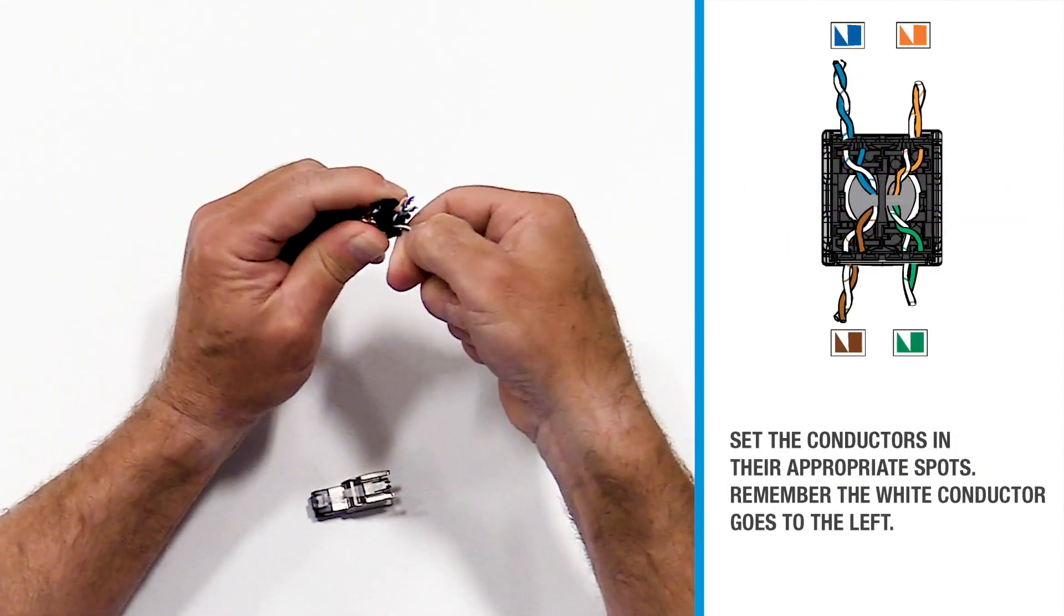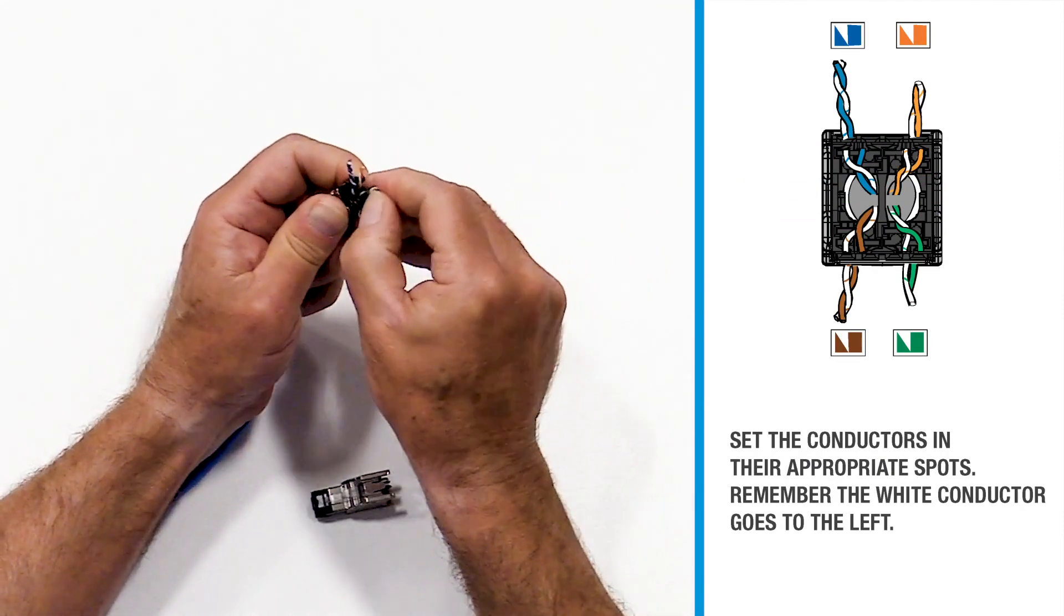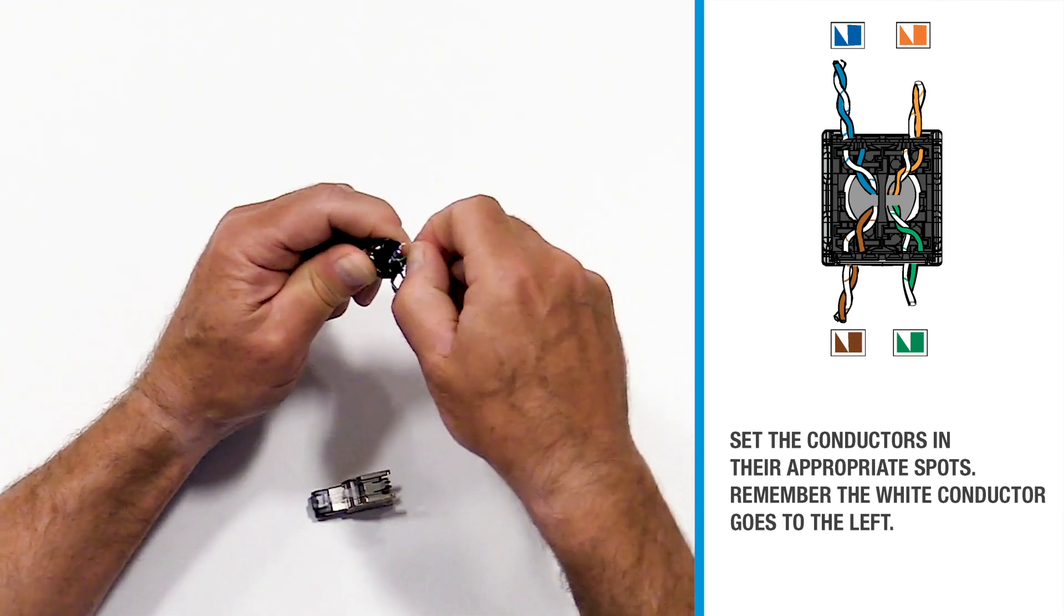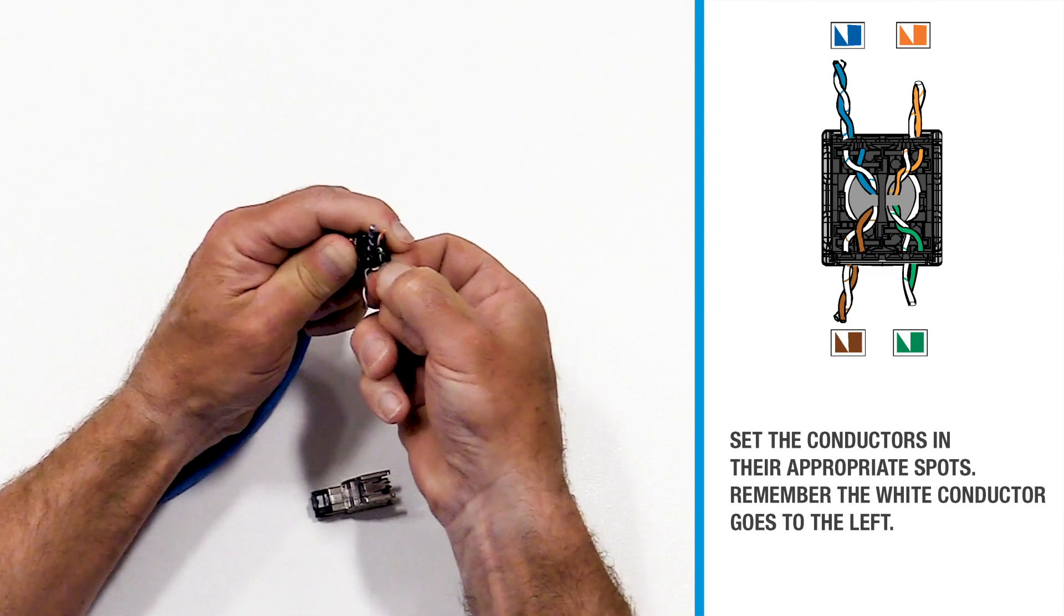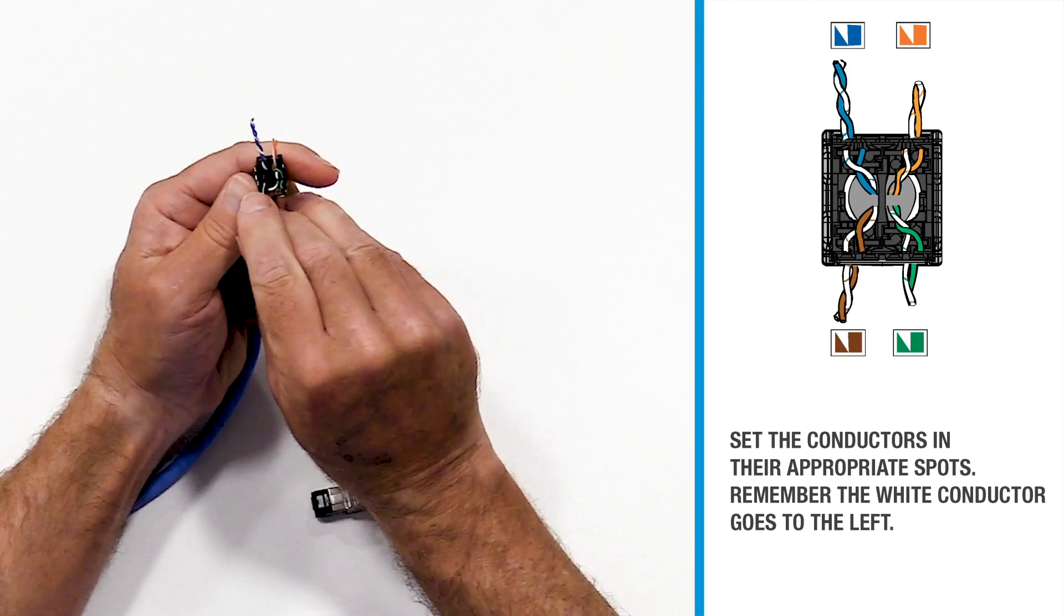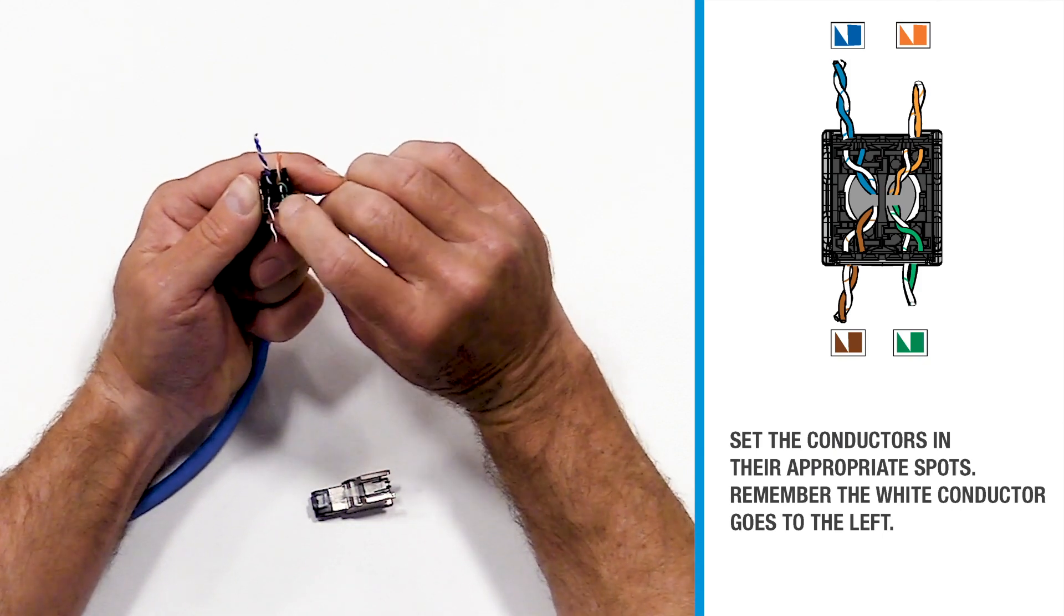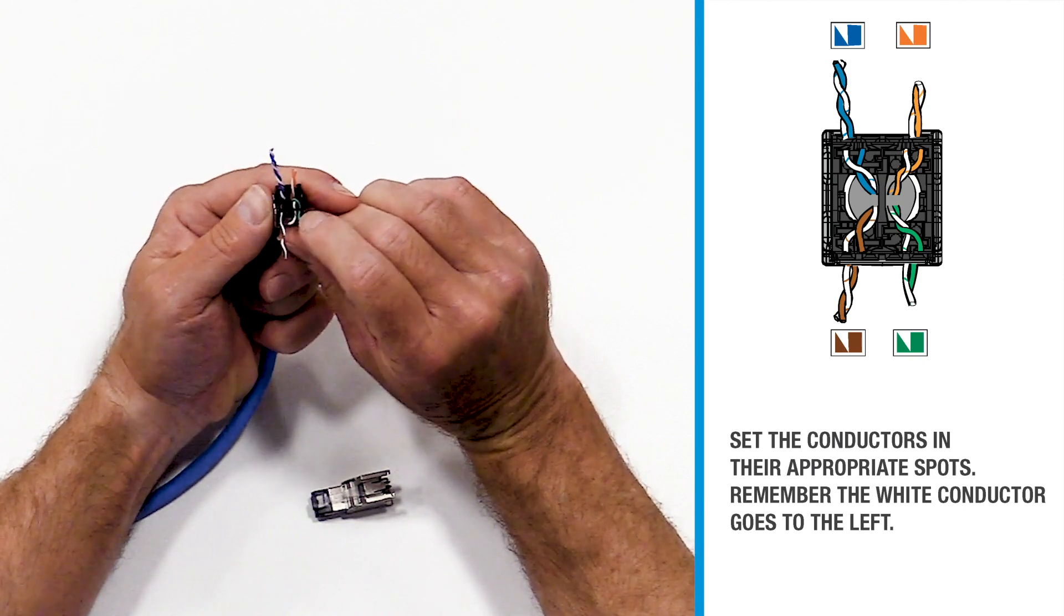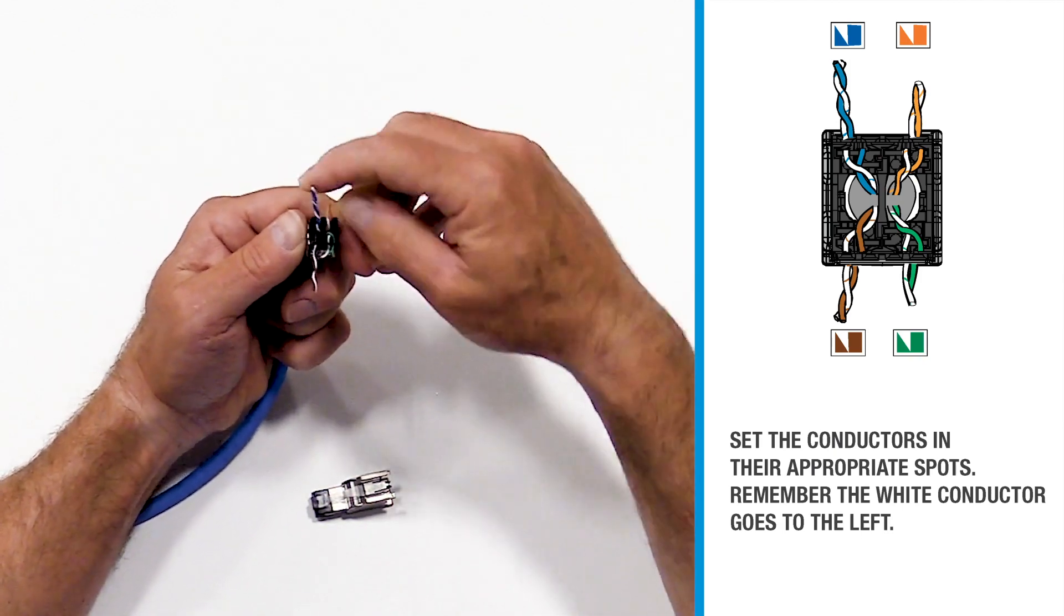Set the conductors in their appropriate spots, always remembering that within the specific quadrant, the white conductor always goes to the left, the solid conductor will always go to the right. The white conductor of the brown pair goes to the left, the brown solid conductor goes to the right. The white conductor of the green pair goes to the left, the solid green conductor goes to the right.